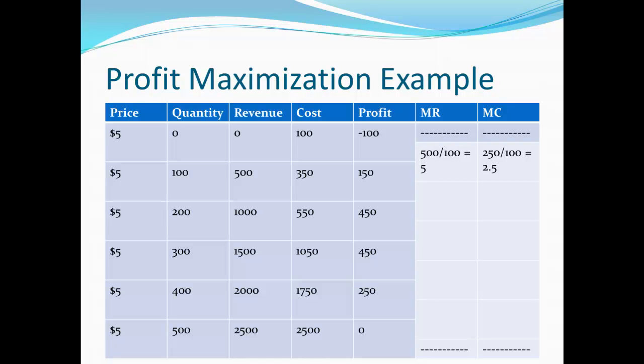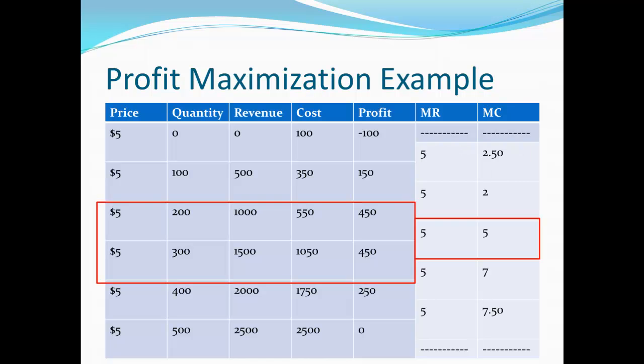Continuing that same calculation for marginal revenue and marginal cost for each line, we end up with this result. Marginal revenue ends up as $5 every single time for the price taker. Meanwhile, marginal cost varies from $2.50 down to $2, but then starts accelerating to $5, $7, and $7.50. We're looking for the point where marginal revenue and marginal cost are equal — we see they're both $5 somewhere between 200 and 300 units. Our table confirms those quantities also give us the highest profit, in this case $450.